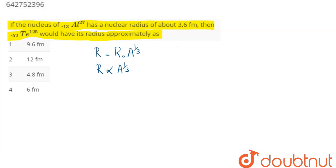Which means that radius of aluminum to radius of tellurium would be proportional to cube root of mass number. That is 27, the mass number of aluminum, whole cube divided by 125, the mass number of tellurium, whole cube.